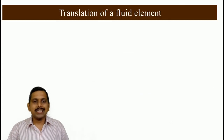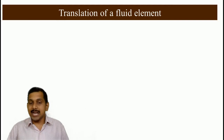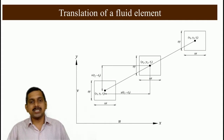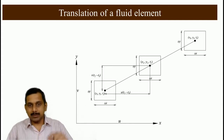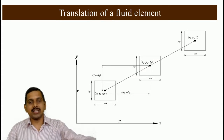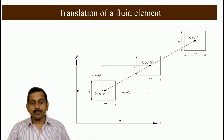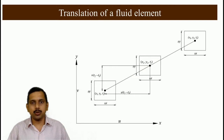Before we go to strain rate, let us understand what translation is. Translation of a fluid element happens when the dimensions do not change and only the location of the particle changes. As you can see, the particle at position x1, y1 at time t1 has moved to x2, y2 at time t2, and x3, y3 at time t3. As it moves, the dimensions delta x and delta y have not changed. The distance between consecutive positions is given by velocity times time — u(t2 − t1) in the x direction and v(t2 − t1) in the y direction.